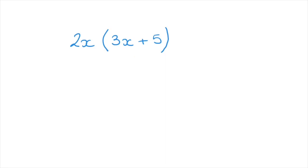To open up this pair of parentheses, all we need to do is distribute this factor, 2x, to each of the terms inside. Remember, since 2x is multiplying these parentheses, when we distribute, it will multiply each of the two terms inside it.